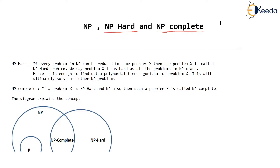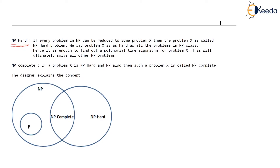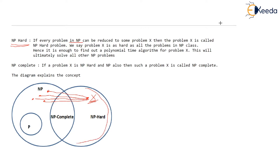If we are able to reduce every problem in NP — every problem which belongs to NP — to some problem X, and if every problem in NP is reducible to this problem X, then this X problem is called an NP-hard problem and it belongs to the NP-hard set. If every problem in NP can be reduced to some problem X, then X is called NP-hard and is as hard as all problems in NP class.